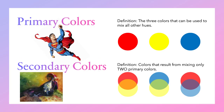Primary colors are the three colors that can be used to mix all other hues: red, yellow, and blue. Secondary colors result from mixing only two primary colors — red and yellow make orange, blue and yellow make green, and red and blue make purple. So secondary colors are orange, green, and purple.